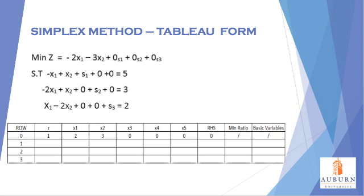Let's now use the simplex method to calculate the solution for the linear program in tableau form. Since we converted the problem to a minimization standard form previously, let's use that same form again using the tableau method. It is important to note that the tableau form can be applied to either a minimization or maximization problem. Let's start out by creating an empty tableau with column headers for the row, the Z value, the decision variables X1 through X5, the right-hand side, a column for the min ratio, and a column for the basic variables.